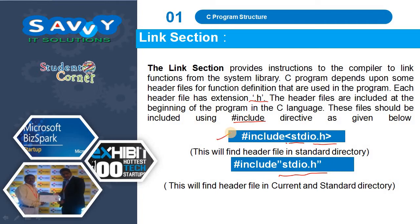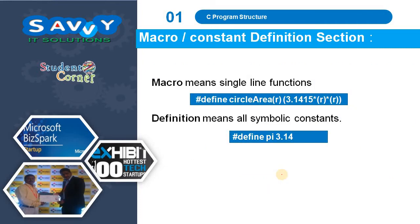There is a difference between angle brackets and double quotations. Angle brackets are for standard header files only, meaning they take files only from the system library. Double quotations are for both standard and user-defined header files — they take from the system library as well as the current directory.